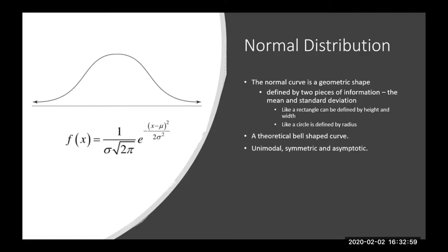The normal curve is also asymptotic, which means it's never-ending. Notice how the distribution has arrows going off into negative infinity on one side and positive infinity on the other. Oftentimes we draw normal distributions as if they have endpoints, but in theory they never end. Every score is possible because these lines go off into never-never land.